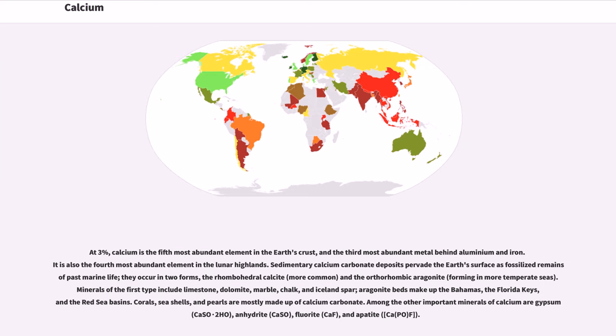At 3%, calcium is the fifth most abundant element in the Earth's crust, and the third most abundant metal behind aluminum and iron. It is also the fourth most abundant element in the lunar highlands. Sedimentary calcium carbonate deposits pervade the Earth's surface as fossilized remains of past marine life. They occur in two forms: the rhombohedral calcite (more common) and the orthorhombic aragonite, forming in more temperate seas.